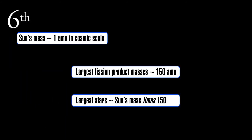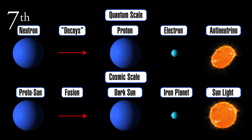Six, the sun's mass is about the mass of one cosmic scale atomic mass unit. In fission explosions, the largest fission products are about 150 atomic mass units. Astronomers estimate the largest stars are about 150 solar masses — another coincidence? I doubt it. Seventh, after 11% of the sun's hydrogen mass fuses into helium and an amount of iron equal to the cosmic scale electron's mass, the remaining hydrogen and helium is the mass of a cosmic scale proton. Another coincidence? Please.